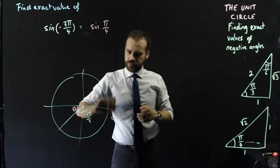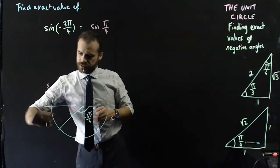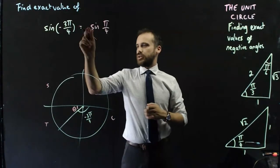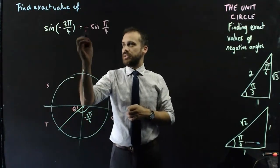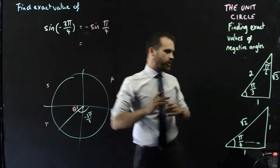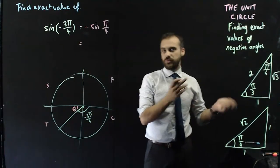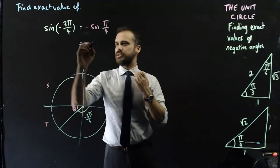All right, now, what quadrant are we in? C, A, S, T. So, it's a sine ratio in the T quadrant, so it's going to be negative. And sine π/4, 1 over root 2 or root 2 over 2, but it's negative.